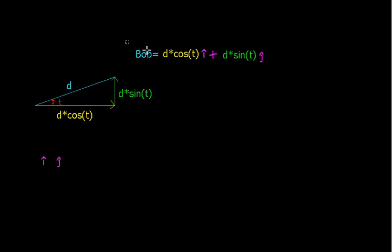So we can say that Bob right here is kind of like this x length, this d times cosine of t, in the i direction. Remember this is our units in the x direction, right? Units in x. So it's that, plus the height, and that's in units in the y direction.